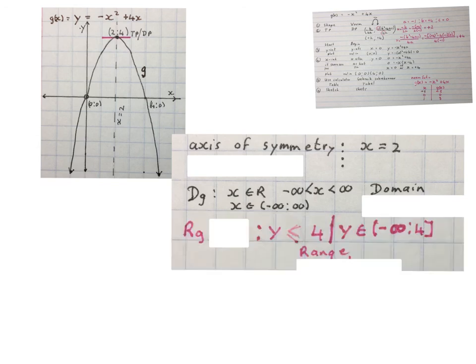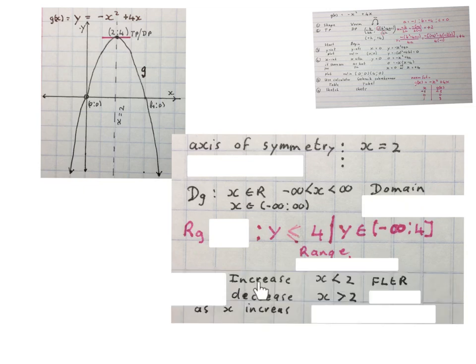Then if they ask you the range, you will write the range of g is y is smaller and equal to 4. In other words, it starts at 4 there and goes down from 4. Any one of those two methods you may write. If they ask you where is this graph increasing, it's where x is smaller than 2. It's increasing on this part, decreasing on this part. It says where does it decrease? You'll say where x is bigger than 2. You work from left to right. And it is as x is increasing.